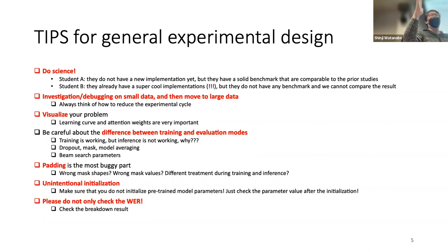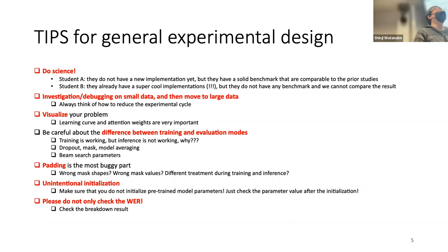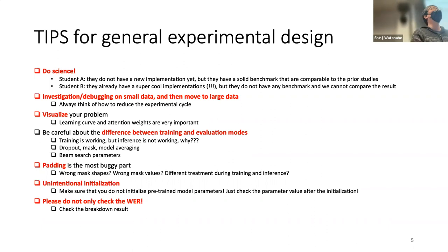If the learning curve looks correct but performance is wrong, check the training-evaluation difference. Another important difference is teacher forcing: during training we use teacher forcing with no beam search, while during inference we use beam search. Beam search parameters can also cause a mismatch between training and inference performance, so please check those as well.